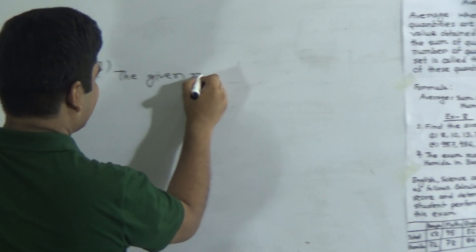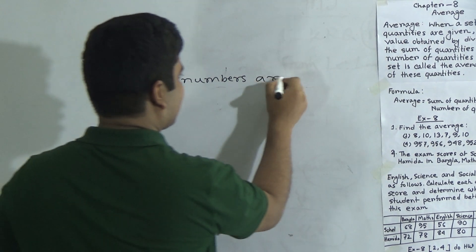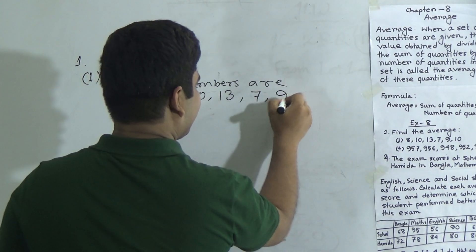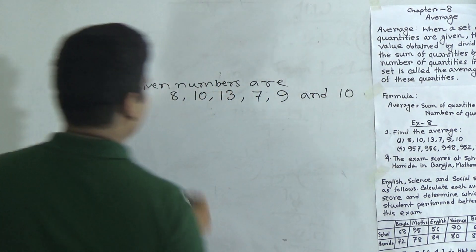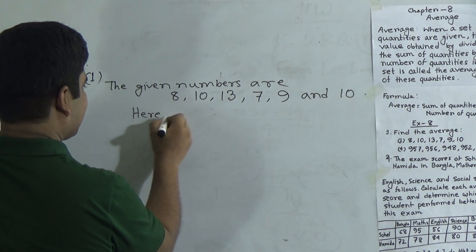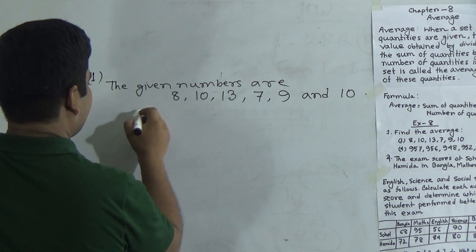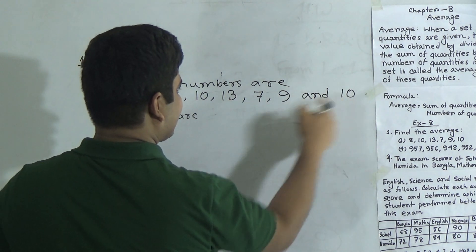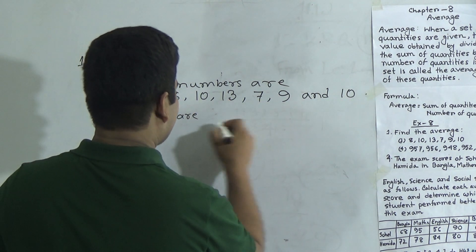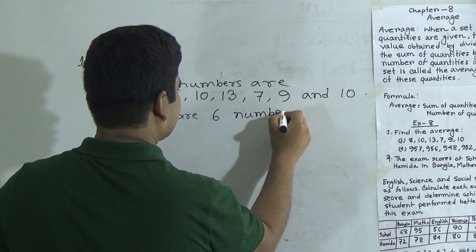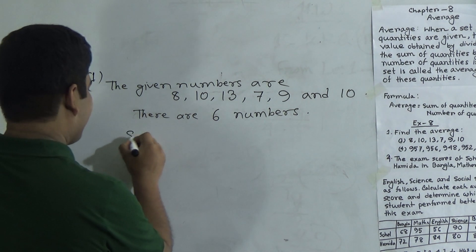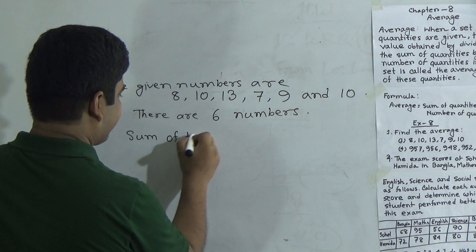The given numbers are 8, 10, 13, 7, 9 and 10. There are 6 numbers. Now we find out the sum of the numbers.